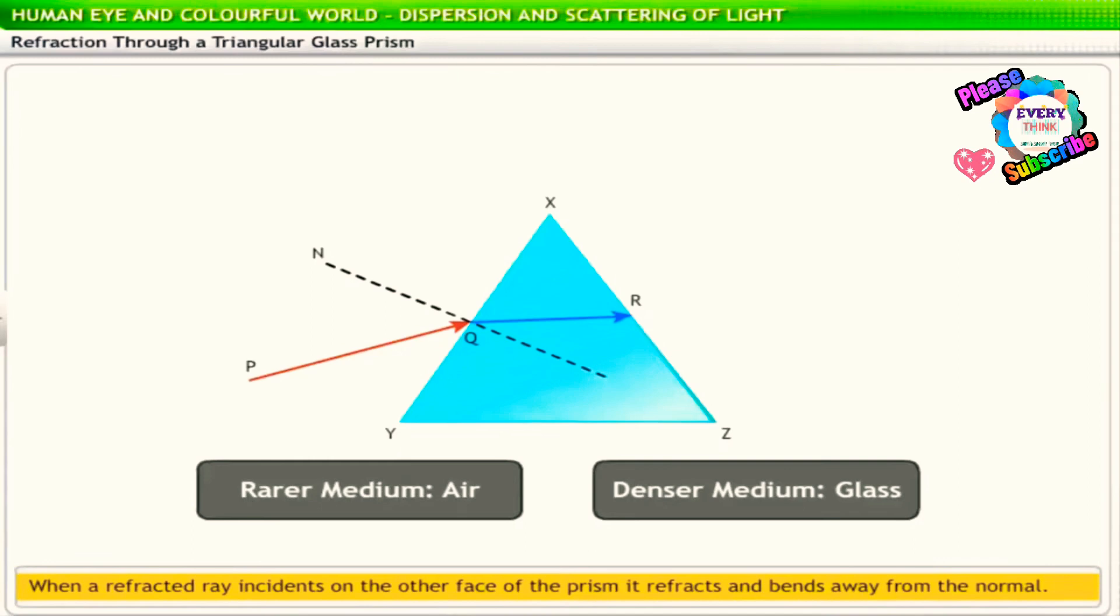When this refracted ray incidents on the other face of the prism XZ at R, it refracts again and becomes the emergent ray RS. Here, the light ray refracts from a denser medium, which is glass, to a rarer medium, which is air. Hence, the light ray bends away from the normal.